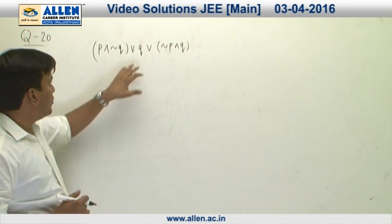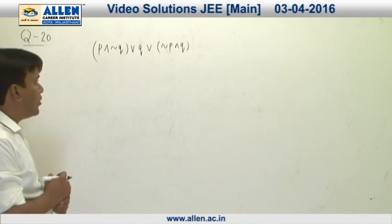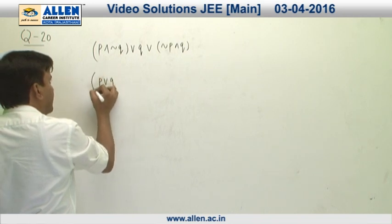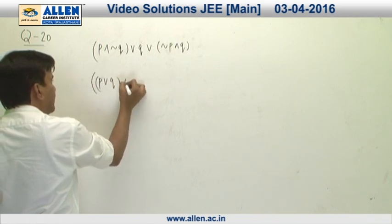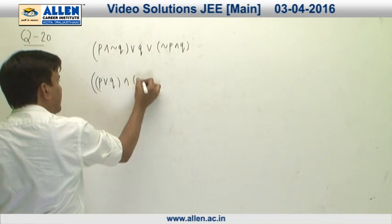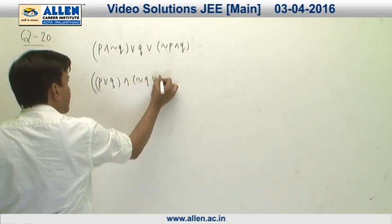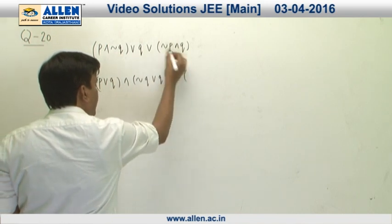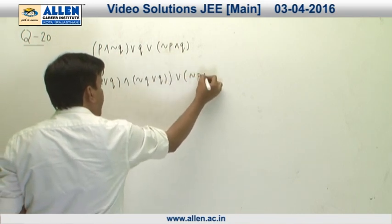What we can do is first apply the distributive law in this part, and this will give us p or q and negation of q, or q and then negation of p and q.